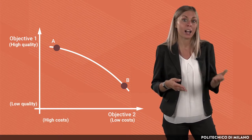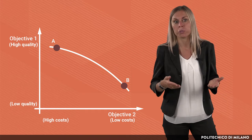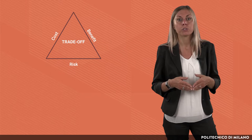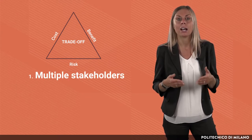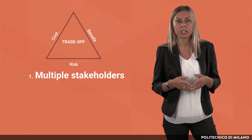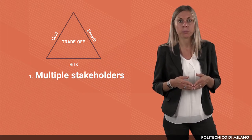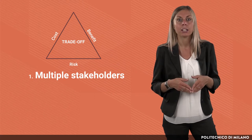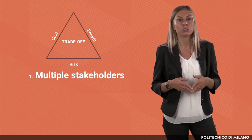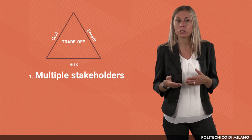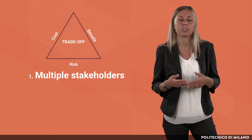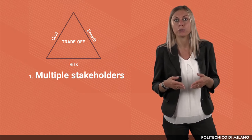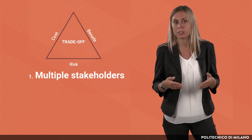For example, high quality is often in trade-off with low cost. Which are typical examples of trade-off? First of all, most of the decision-making process involves several stakeholders, and each stakeholder brings a personal view of the problem and a personal purpose. In this situation, it might happen that goals of different stakeholders are in contrast to each other. Actually, also a single stakeholder might be pushed by different goals, so a trade-off arises also with a single decision-maker.